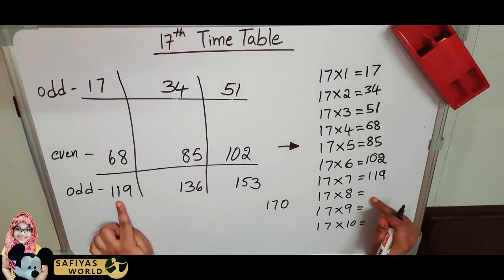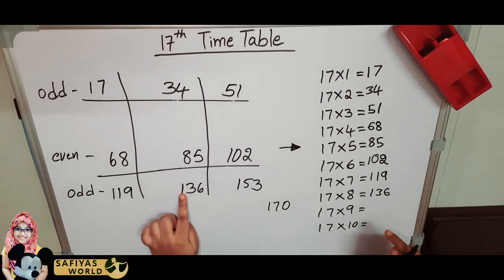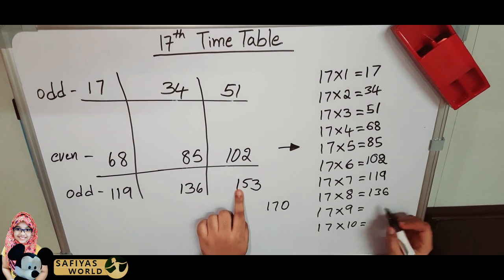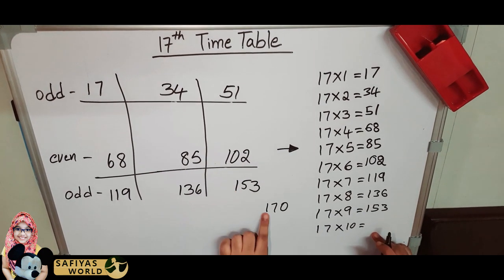17 eights are 136, 17 nines are 153, 17 tens are 170.